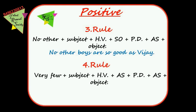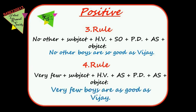Rule 4: Very few + subject + helping word + as + positive degree + as + object. For example, 'Very few boys are as good as Vijay.' Because 'very few' comes, 'as...as' appears around the positive degree. With a negative sense, 'so...as' appears around the positive degree.